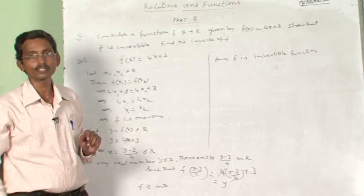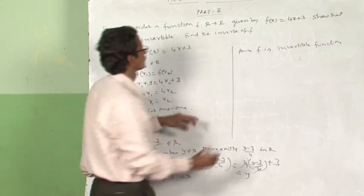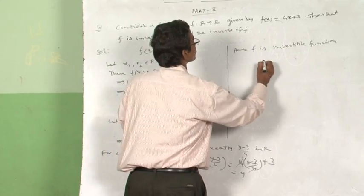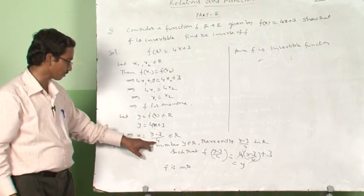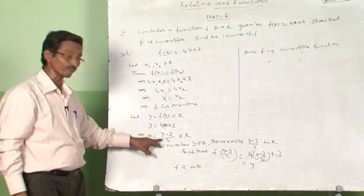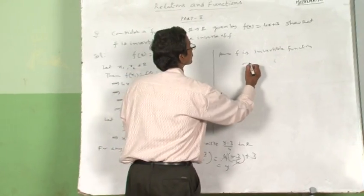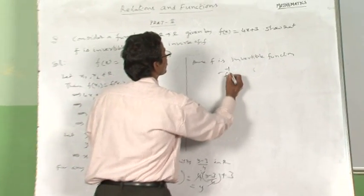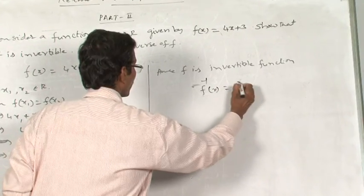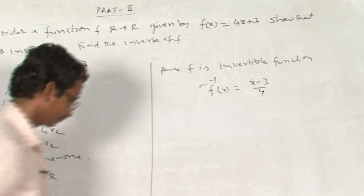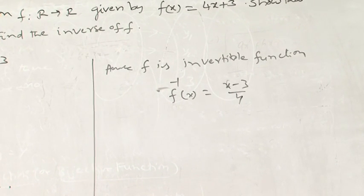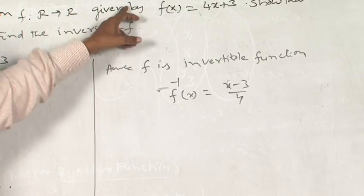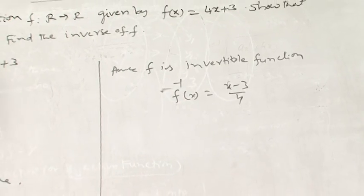Now we want to find the inverse of F. Here, x = (y − 3)/4, so this is F⁻¹(y). Therefore F⁻¹(x) = (x − 3)/4. The inverse of the given function is (x − 3)/4.